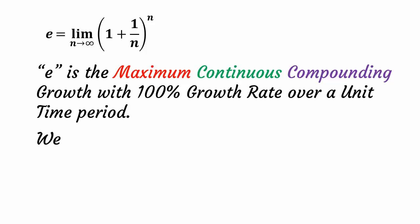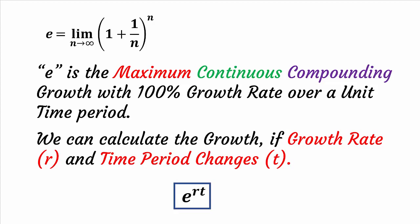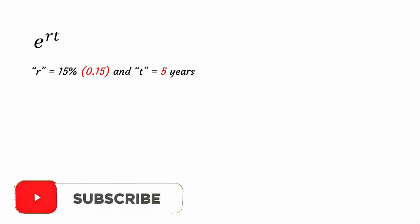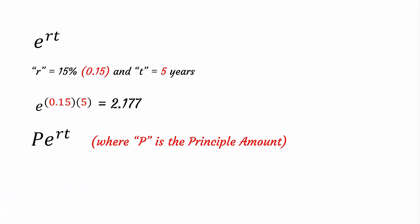The question is now: how do we calculate the growth if growth rate and time period changes? It is very simple: e to the power rt. Let us take an example. If growth rate is 15% and the time period is 5 years, what will be the growth at the end of 5 years? r is 15%, which means 0.15. The growth at the end of 5 years will be 2.117.